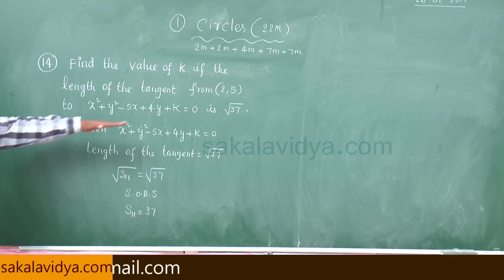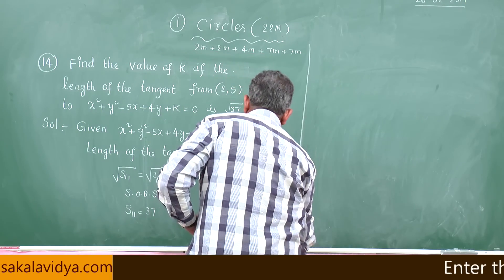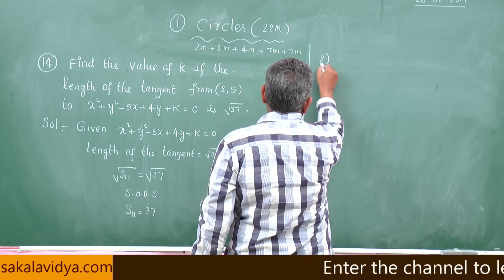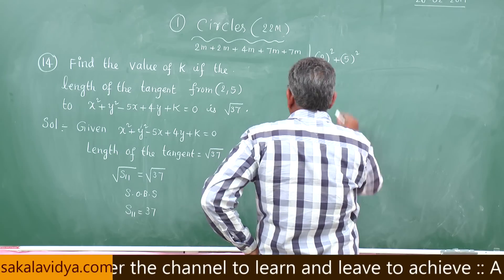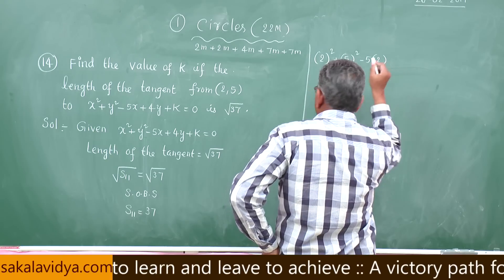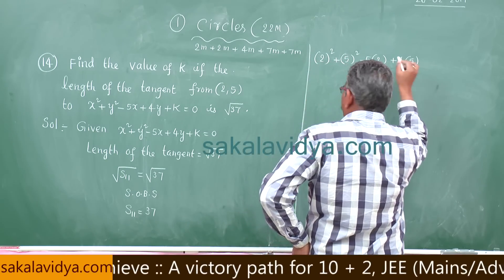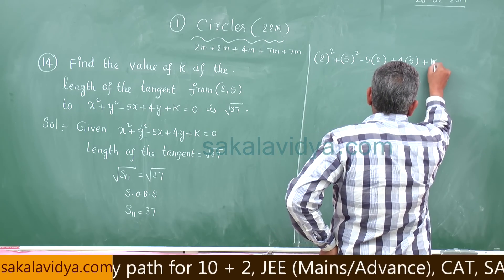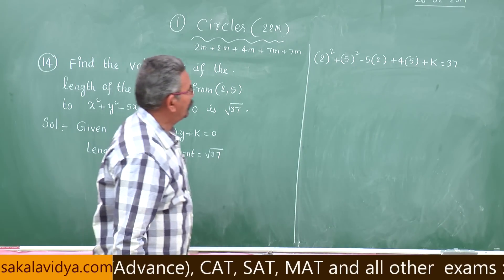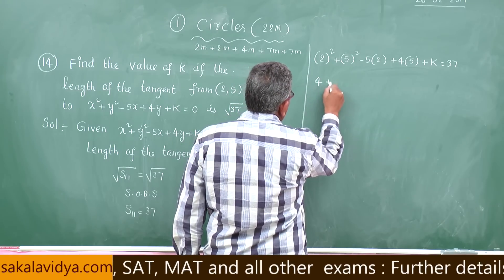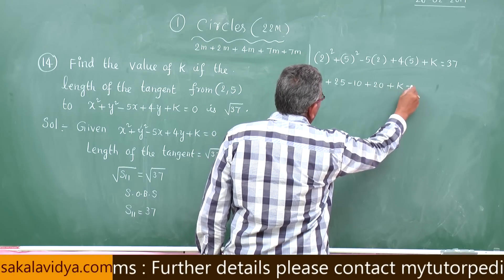S₁₁ means we replace x=2 and y=5 in the equation. So: 2² + 5² - 5×2 + 4×5 + K = 37, which gives 4 + 25 - 10 + 20 + K = 37.